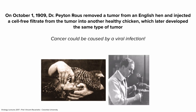It was 1909, not long after viruses had been discovered. Rous showed that if you took a tumor from a chicken, ground it up, filtered it through 0.2-micron filters, and injected the cell-free filtrate into a new chicken, it would cause a tumor. He showed that cancer could be caused by a viral infection — he was actually the first to show this. A year earlier, two other investigators showed that leukemia could be caused by a virus, but at the time people didn't think leukemias were tumors.